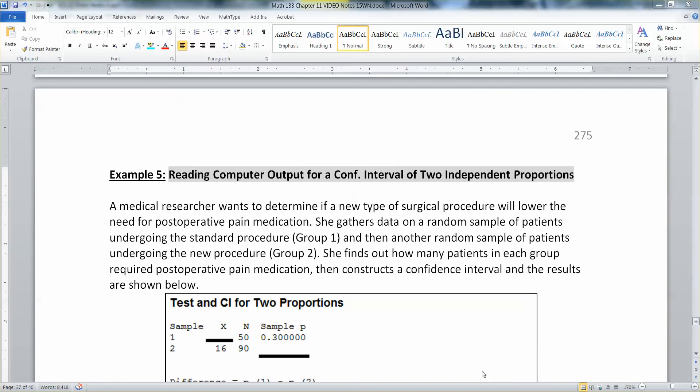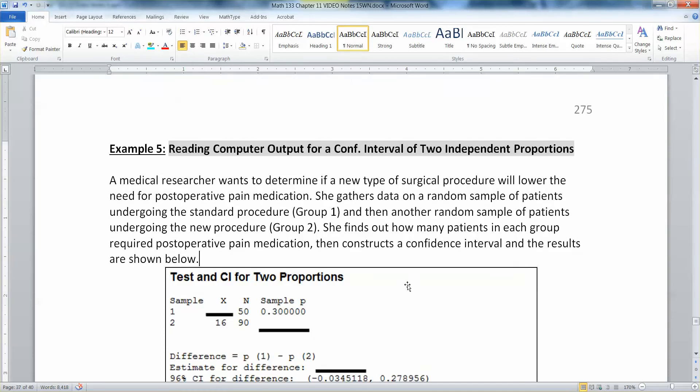It's important that we can not only construct confidence intervals for two independent proportions with a calculator, but we can also read outputs, fill in blanks, and analyze those outputs. A medical researcher wants to determine if a new type of surgical procedure will lower the need for post-operative pain medication. She gathers data on a random sample of patients undergoing the standard procedure (group one), and then another random sample of patients undergoing the new procedure (group two). She finds out how many patients in each group required post-operative pain medication, then constructs a confidence interval, and the results are shown below.